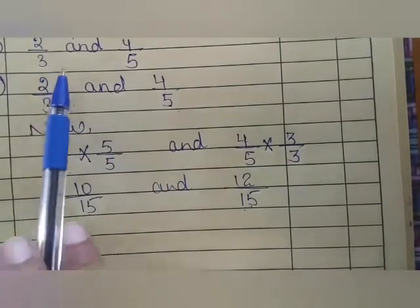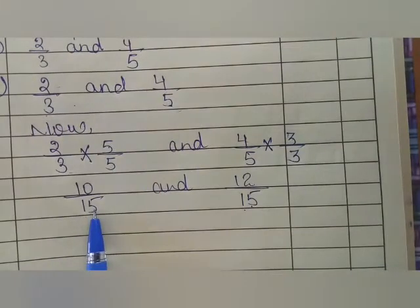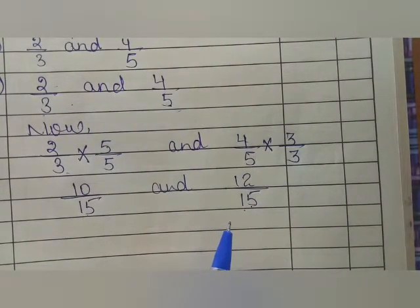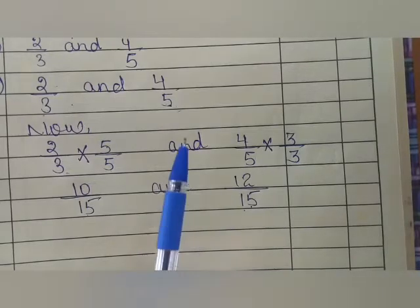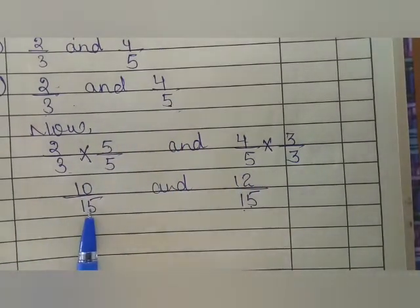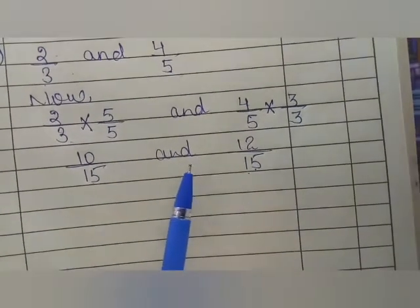We have given denominator 3 and 5, but now we have changed it to 15 because we have to find 5 rational numbers between these 2 numbers. After that, the second step will be to look at the requirement of the question.